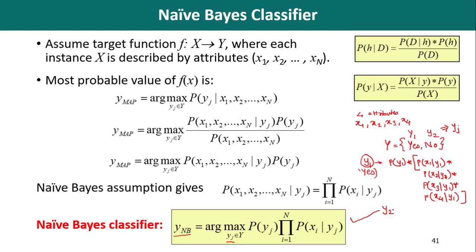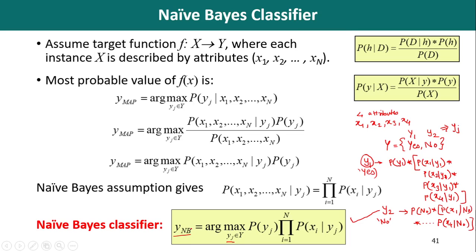Ultimately, if we are having two classes yes and no, we will have this quantity for yes and this quantity for no. Whichever is the maximum quantity — say for example, if the quantity for label yes is maximum — then we predict that the sample belongs to class yes. I hope you must have understood these concepts.